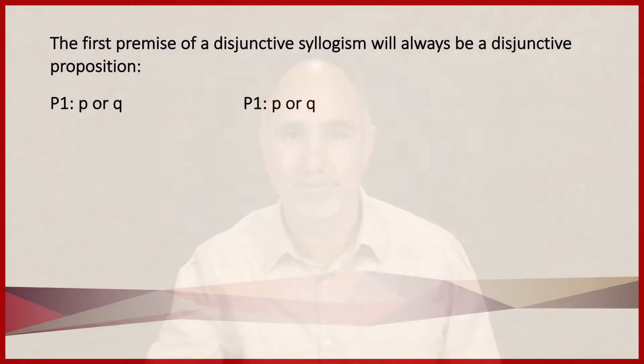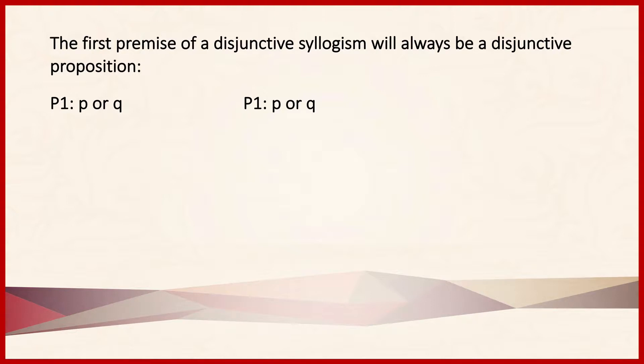The final class of syllogisms we're going to consider are disjunctive syllogisms. A disjunctive syllogism is a syllogism containing a disjunctive proposition. There's one thing all disjunctive syllogisms share in common: the first premise of every disjunctive syllogism will always be the disjunctive proposition — P or Q gets listed first.